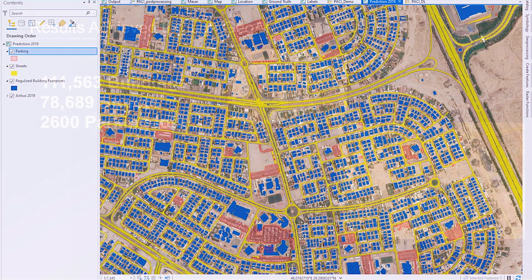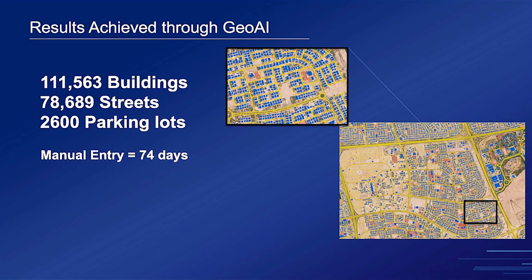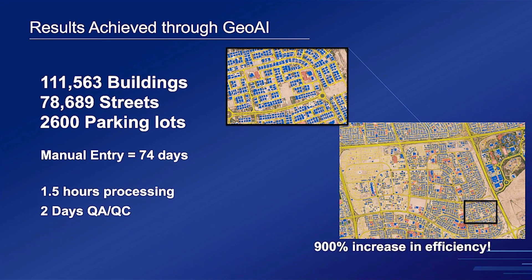Running this prediction over 600 square kilometers, we had around 111,000 building footprints, around 78,000 street segments, and around 2,600 parking lots. Usually this needs around 74 days to digitize. We achieved this in 1.5 hours of processing, and two days for quality control and quality assurance. You can see the boost in efficiency.